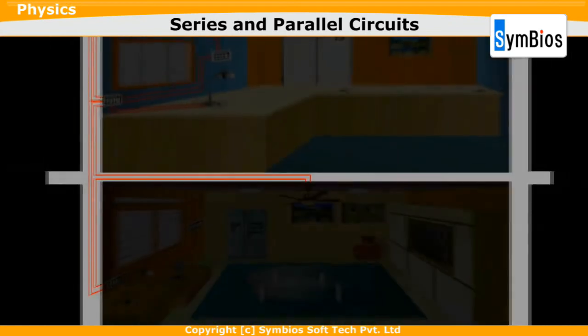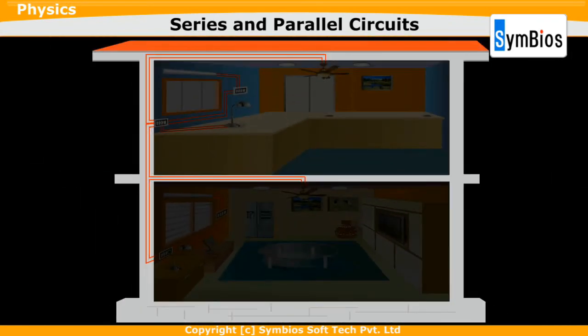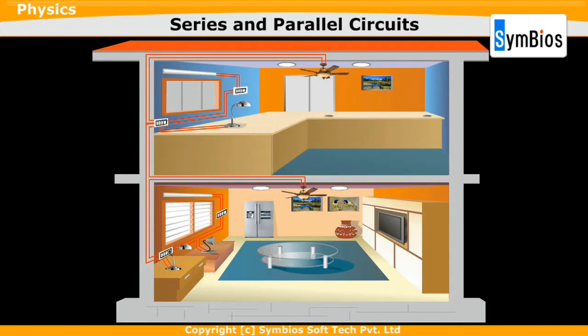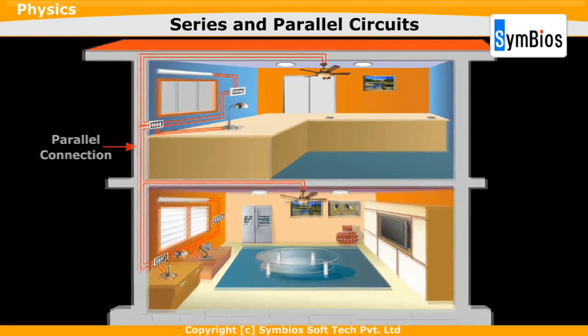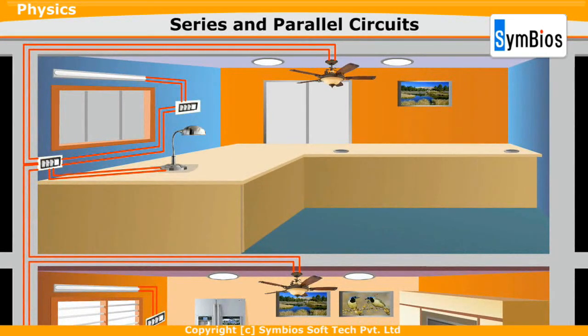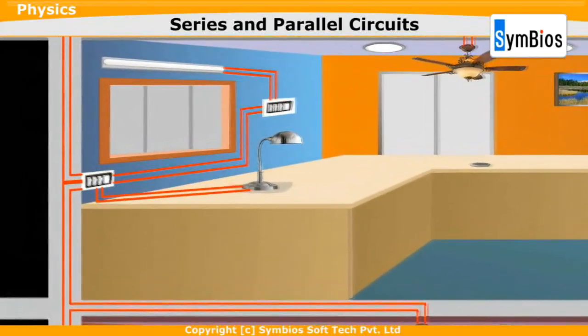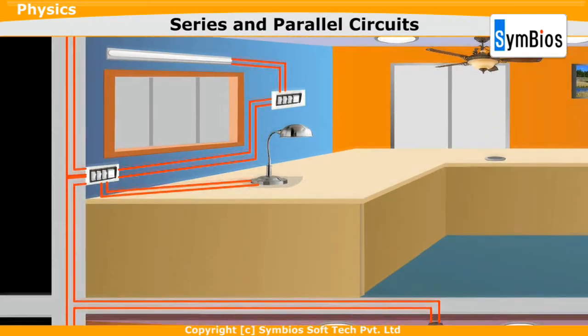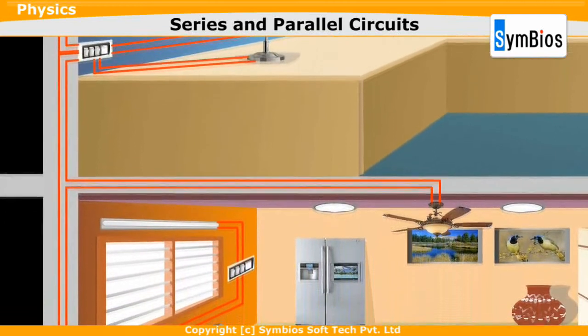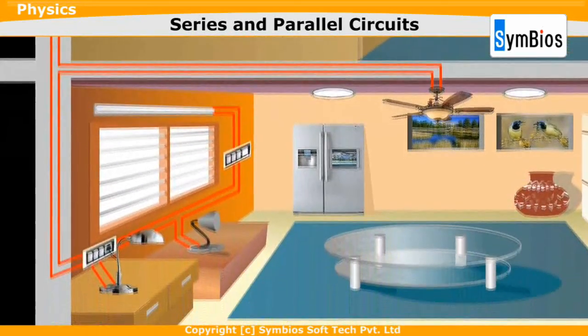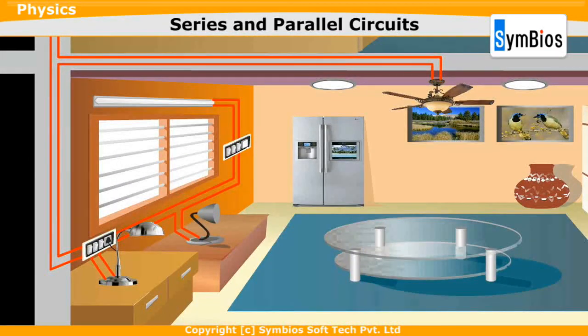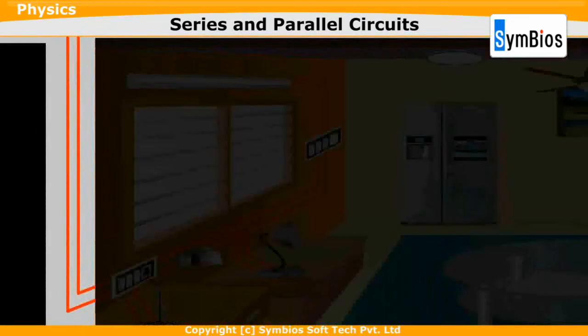When you switch on a light in your home at night, you are working with a light bulb that is wired in parallel with other appliances in your home. Parallel circuits are very useful. You allow current to pass down one branch of the circuit and stop it from passing down another branch just by switching the appliance on or off.